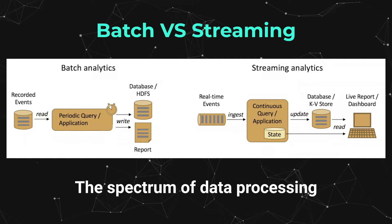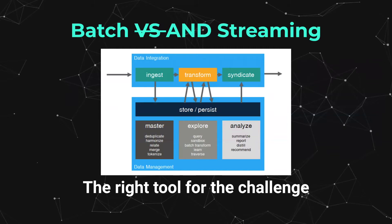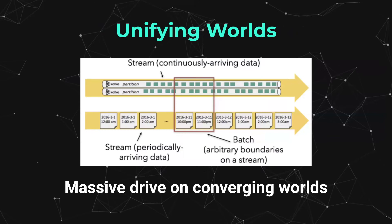This batch versus streaming piece — the spectrum of data processing — is where ultimately with batch you have a limited dataset with a start and an end, whereas with streaming you have the concept of continuously processing pieces. However, it's not just batch versus streaming, but tends to be batch and streaming: using the right tool for the challenge. More importantly, there is a discussion where these two differing worlds are being unified — where batches themselves are actually streams with a limited start and end.